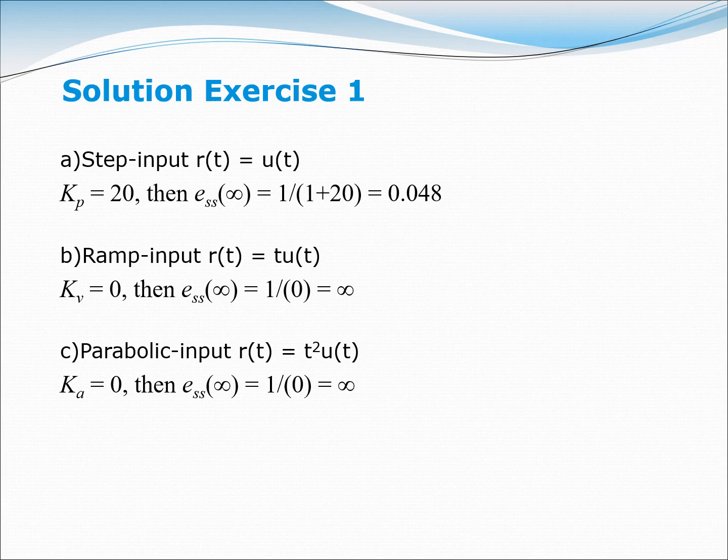For the step input, Kp equals 20, so the steady state error is 1 over 1 plus 20, which equals 0.048. For the ramp input, Kv equals 0, so the steady state error is 1 divided by 0, which is infinity. Similarly for the parabolic input, Ka equals 0, giving a steady state error of infinity. Please practice finding more examples on how to calculate steady state error. That's all for this lecture, thank you.